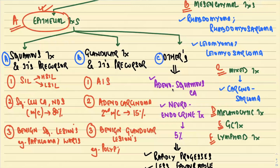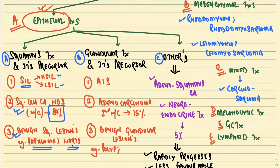Among squamous tumors and precursors, we have squamous intraepithelial lesions — including HSIL and LSIL — then invasive carcinoma accounting for 80 percent of all cervical cancer cases as squamous cell carcinoma of the cervix NOS (not otherwise specified), and lastly certain benign squamous lesions such as papillomas and warts.